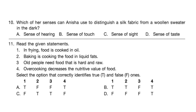Question 11: Read the given statements. 1 — In frying, food is cooked in oil. 2 — Baking is cooking the food in liquid fats. 3 — Old people need food that is hard and raw. 4 — Overcooking decreases the nutritive value of food. Statements 1 and 4 are true, and 2 and 3 are false. So option A is the correct answer.